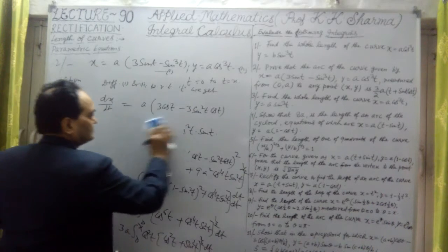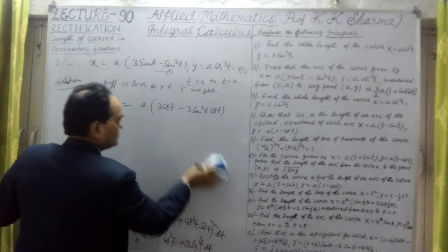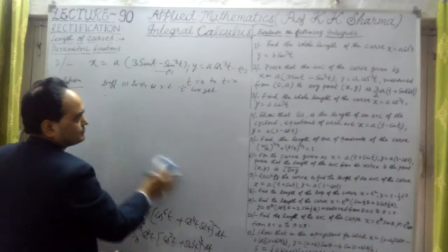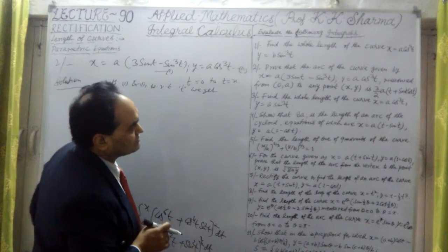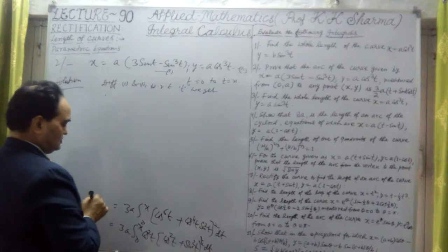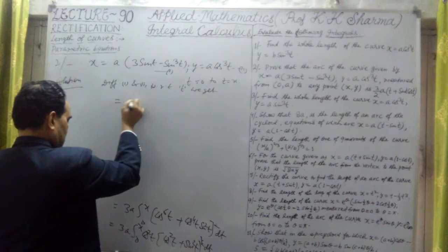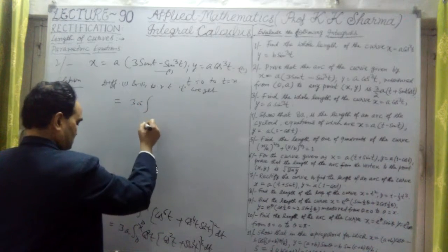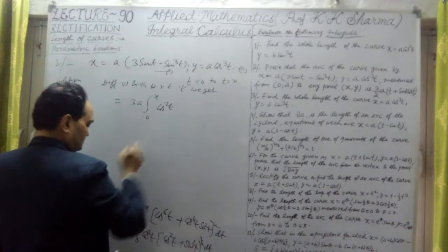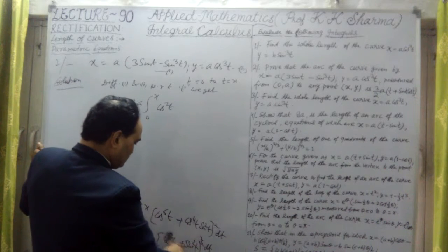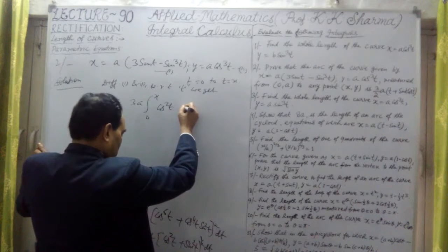Now let me take this one. So what we have to prove here? We have to prove that this value is equal to t plus sin t cos t, times 3/2 a. So it will give us 3a. Integration from 0 to x of cos square t. Now this is 1 here, because cos square t plus sin square t is 1, so it is only dt.